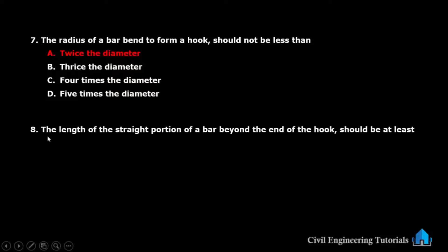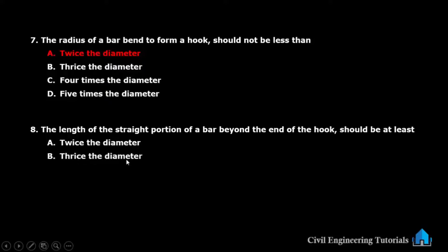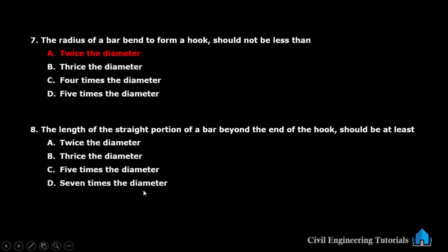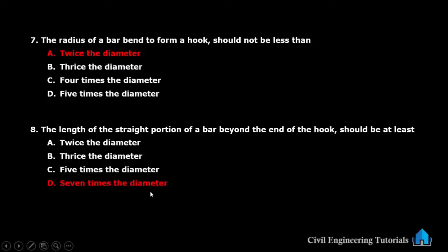Next question: the length of the straight portion of a bar beyond the end of the hook should be at least — option A: twice the diameter, option B: twice the diameter, option C: five times the diameter, option D: seven times the diameter. The answer is seven times the diameter — the straight portion of a bar beyond the end of the hook should be at least 7D.